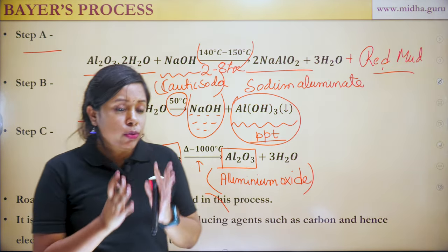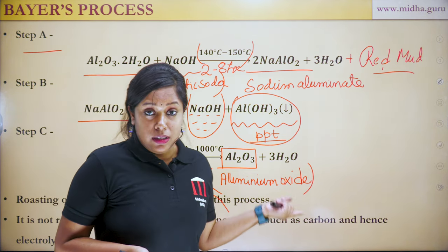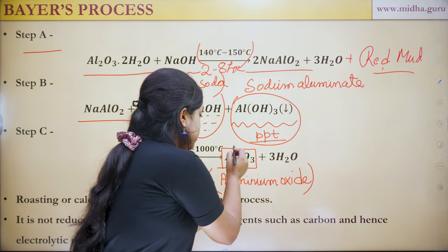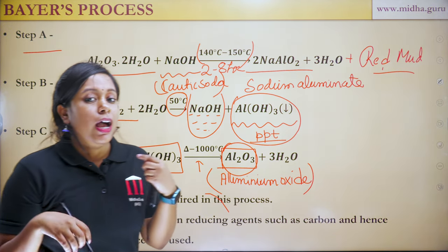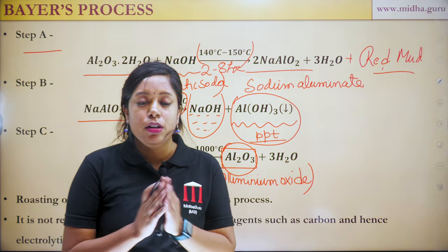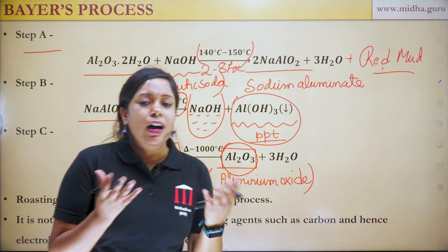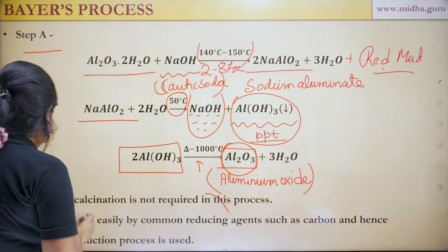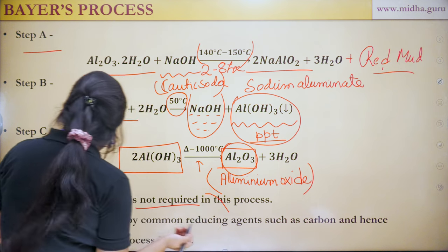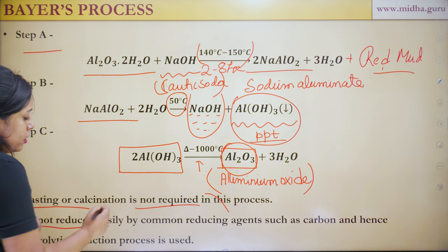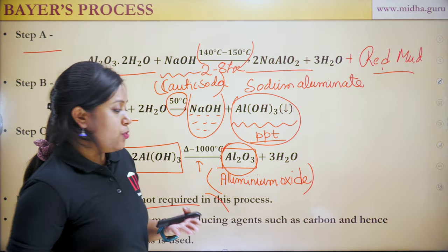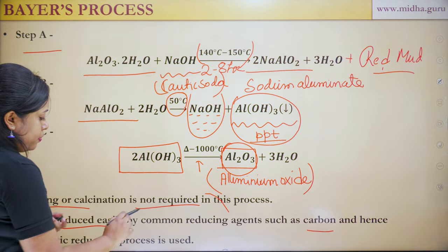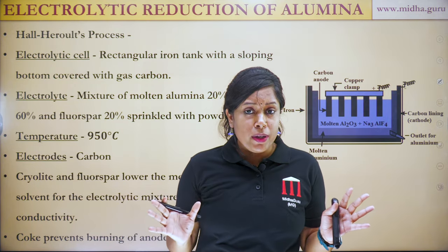Since we already obtain aluminium oxide from the Bayer's process, roasting and calcination are not required. Also, aluminium oxide is very stable and cannot be reduced by common reducing agents like carbon, hydrogen, or carbon monoxide, so we use electrolytic reduction.